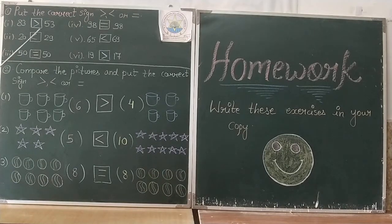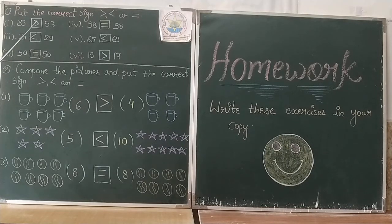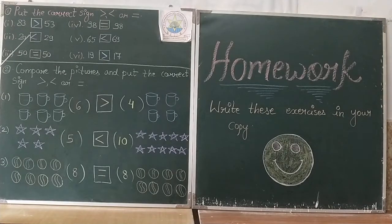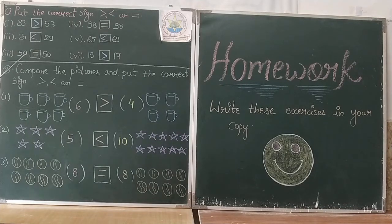तो यहाँ पर 83 and 53: 83 बड़ा है, तो इसका mouth open रहेगा, and 53 छोटा है, तो mouth बंद रहेगा। Second question: 20 and 29 — 29 बड़ा है, तो इसका mouth open रहेगा, and 20 is small, so इसका mouth close रहेगा। Question number 3: 50 and 50 — 50 and 50 same हो गया, equal हो गया, तो यहाँ पर equal to का sign हो जाएगा।